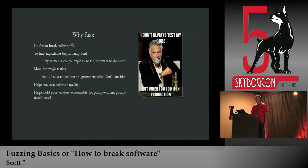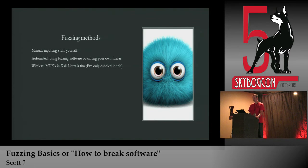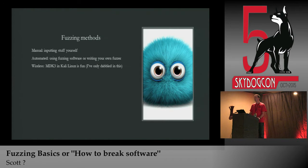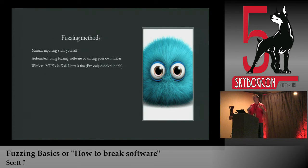Fuzzing methods — I basically broke it down into three categories. Manual fuzzing is where you just put stuff in yourself, whether it's a Windows forms program or a web application. I work mostly in the .NET realm, so that's where most of my fuzzing experience is from. The three methods are: manual inputting stuff yourself, automated using fuzzing software or writing your own fuzzer, and wireless fuzzing.